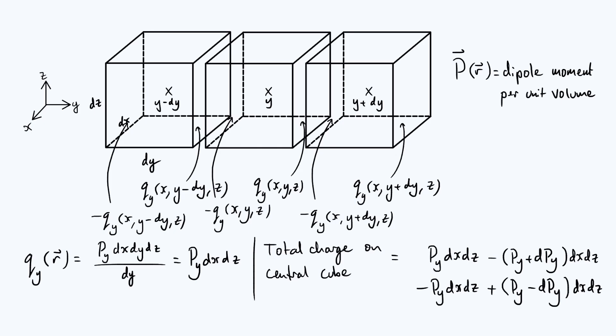If we imagine that the charge is uniformly spread throughout that entire very very thin surface, you can see that half of it will be part of one cube and half of it will be part of the other cube. So we really want to halve this entire expression so that we don't double count our charges.